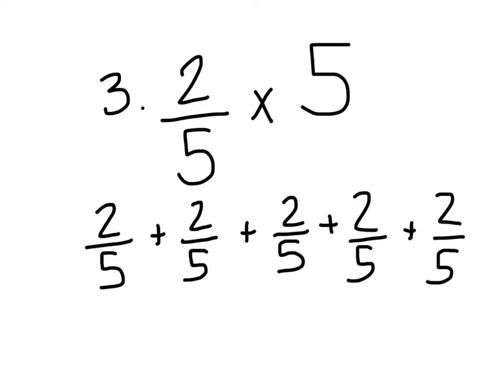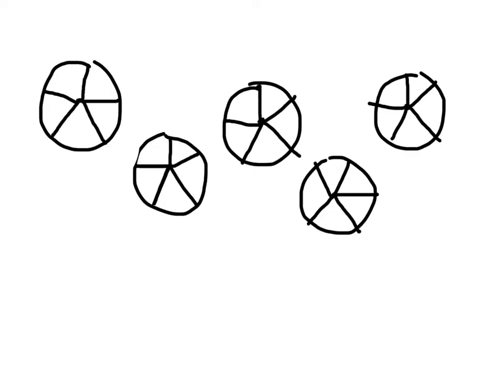Well, let's model it. I took 2/5 times 5 and modeled it. What does it mean? It means 2/5 five times. What I did was I created five circles - we'll count them: one, two, three, four, five - and I split them into fifths.